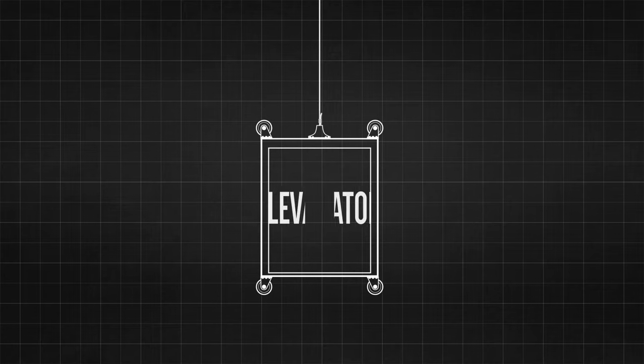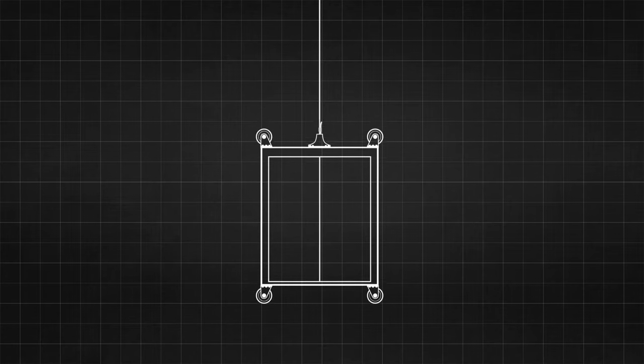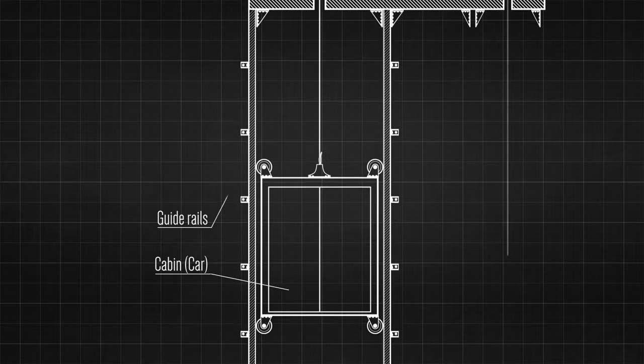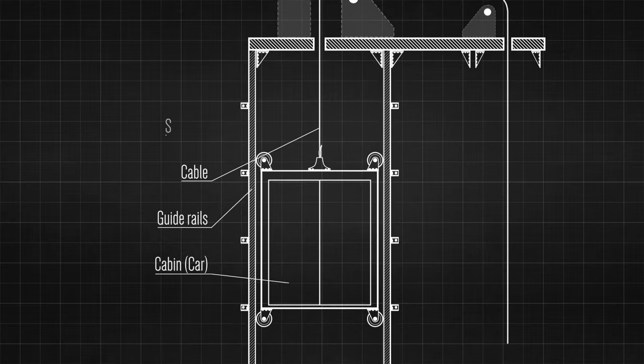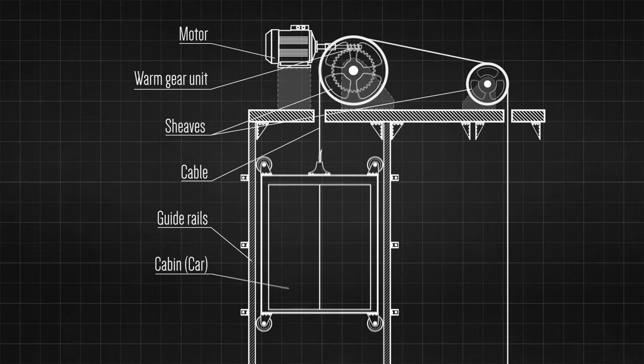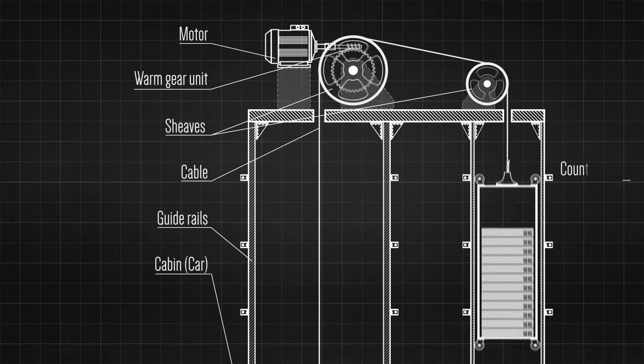Here is a simplified diagram of a typical elevator with its cabin, guide rails, cable sheaves, worm gear unit, motor, and something that we call counterweight.